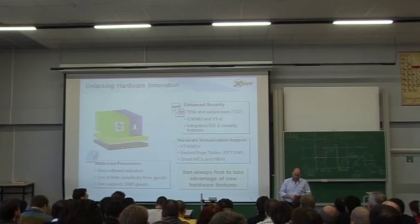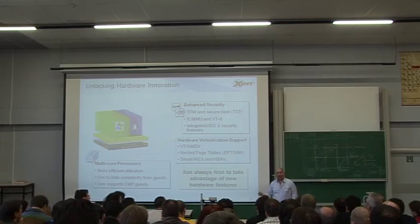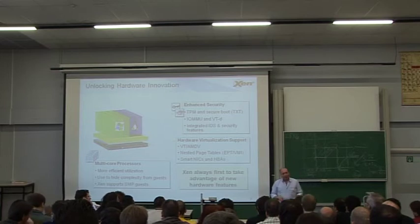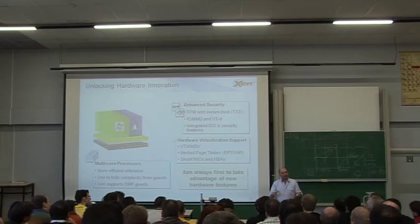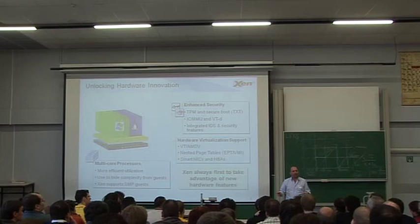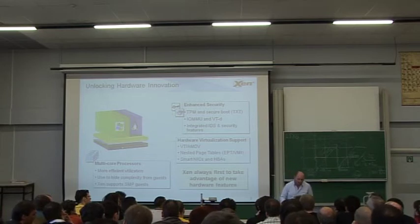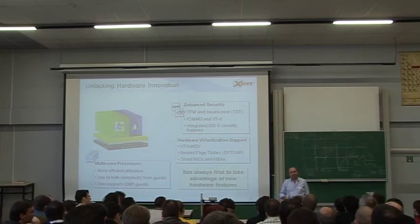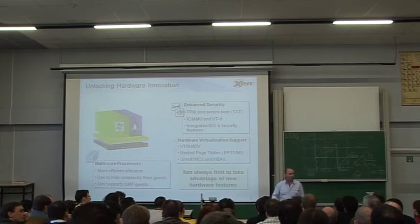We've seen surprising results where virtualization actually improves performance. Someone running one application on a four-CPU machine found better throughput by running Xen, creating four uniprocessor VMs, and running a copy of the application in each — because the application lacked SMP scalability. Even things expected to scale well often don't. We've seen this with Apache, where running multiple web servers each in their own OS gives better performance than one instance on a big machine.